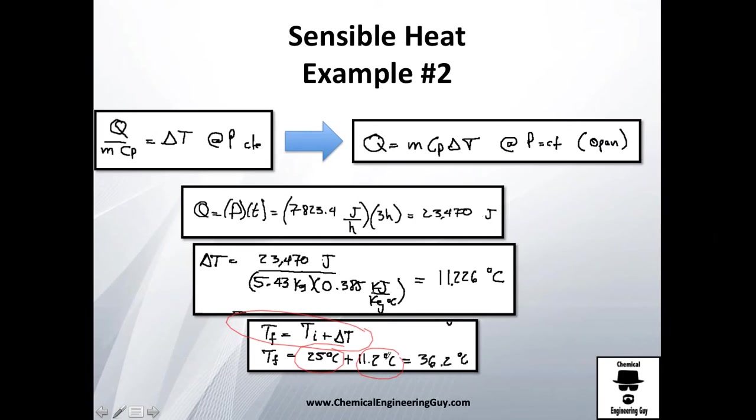So we knew that it was the initial temperature, 25 Celsius. Therefore I must have 25 Celsius plus the change in temperature that I should have with that amount of heat, which is 11.2. So I just add them up and my final temperature is going to be 36.2 Celsius.